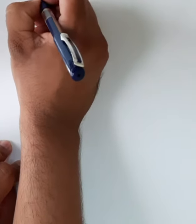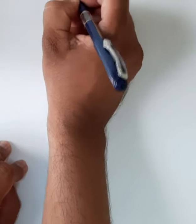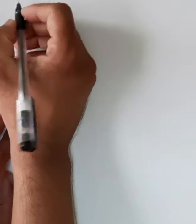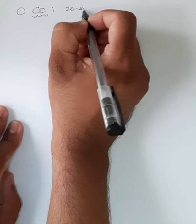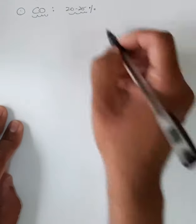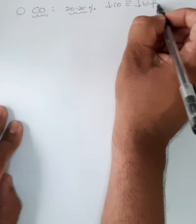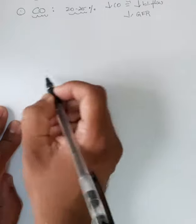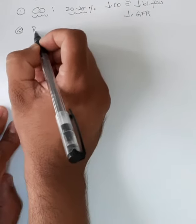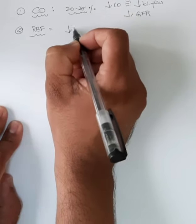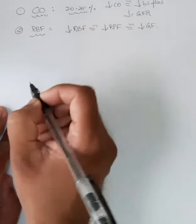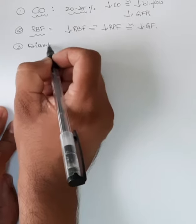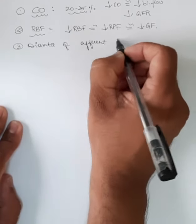Next we will discuss the factors affecting GFR. Number one is cardiac output and blood flow. Normally the kidney receives 20 to 25 percent of the cardiac output; if cardiac output decreases, there will be decreased blood flow, causing decreased glomerular filtration. Number two is renal blood flow: if RBF decreases, it causes decreased renal plasma flow and indirectly causes decreased GFR. Number three is the diameter of the afferent and efferent arterioles.